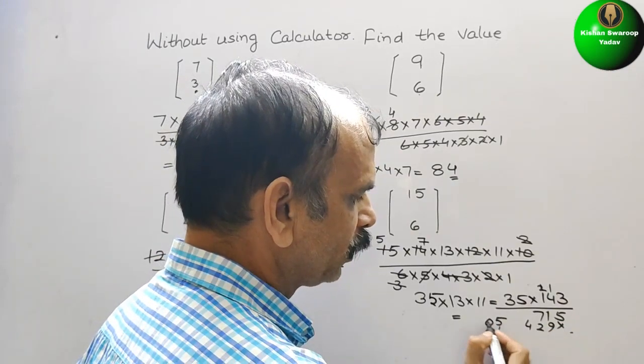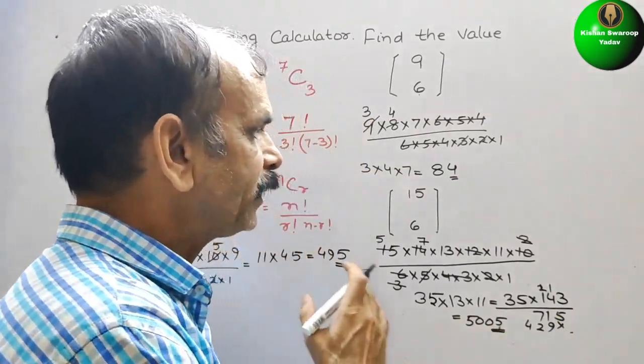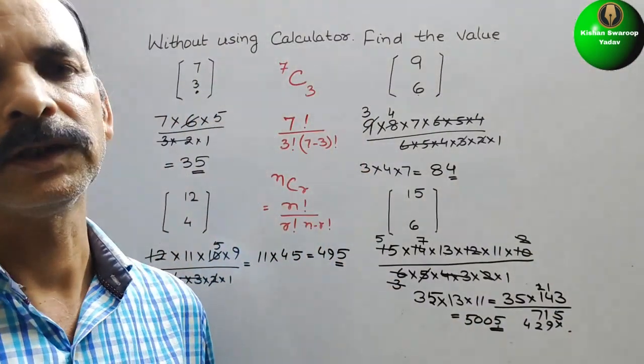So your answer is 5 here, 0 here, 0 here, 5. 5, 0, 0, 5. So like this we have to do this type of questions.